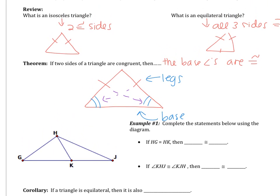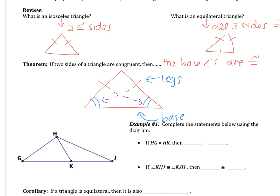Let's look at example number one. It says complete the statements below using the diagram. The first statement is HG is congruent to HK. That tells me I'm looking at the triangle on the left. If I have two sides congruent, that means the base angles are congruent — the angles across from the legs. So I would know that angle HGK is congruent to angle HKG.